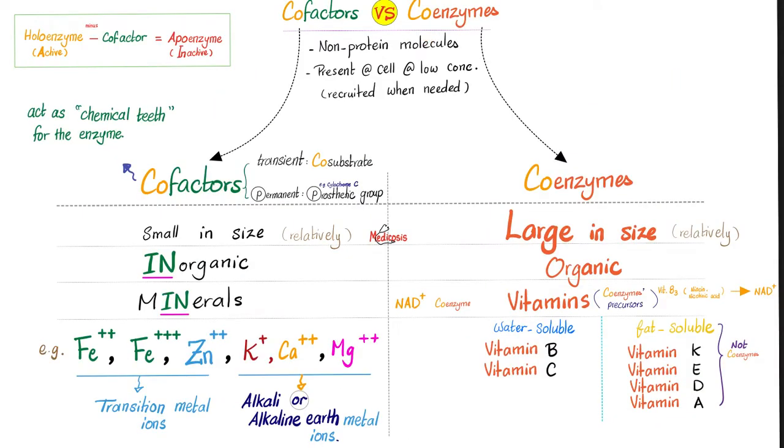Does the enzyme need helpers? Yes. Just like a pilot needs a co-pilot, an enzyme needs coenzymes and cofactors. These are non-protein molecules, but enzymes, for the most part, are proteins. Cofactors and coenzymes are present in your cells at low concentration - we call them micronutrients for a reason - and you can recruit them only when needed.